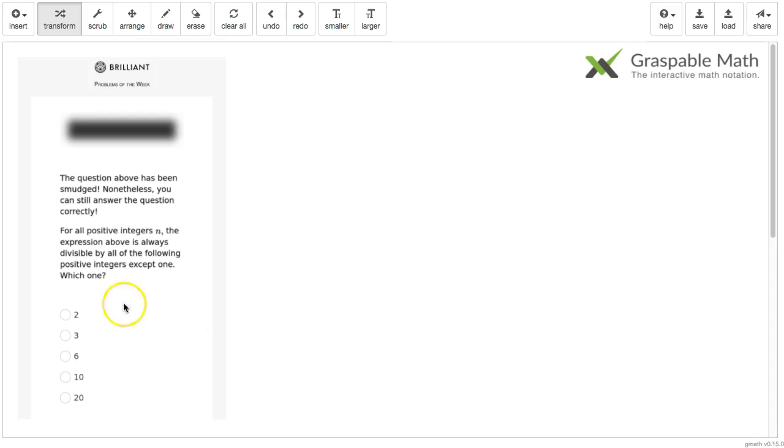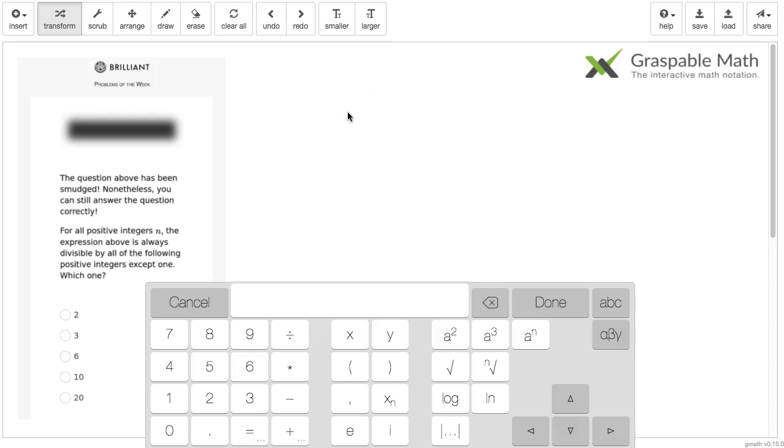Which one? So we know there's just a single one of these numbers by which the expression is not divisible for all integers n. And n is probably some part of this expression. So for divisibility, it's always good to look at the prime factors. I'm going to write these options down in that way.